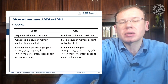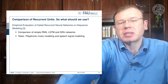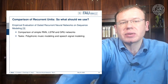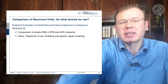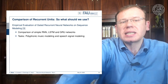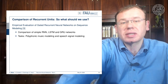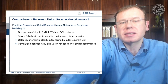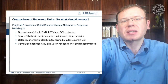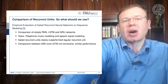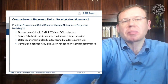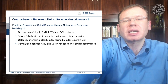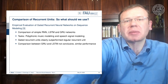We can also compare them empirically. Reference 3 presents an empirical evaluation of gated recurrent neural networks on sequence modeling, comparing simple RNNs, LSTMs, and GRUs on tasks of polyphonic music modeling and speech signal modeling. Results indicate gated recurrent units clearly outperformed the regular recurrent unit. The comparison between GRU and LSTM was not conclusive — they showed similar performance. Both are well-suited for sequence modeling; the GRU has fewer parameters but for these tasks it didn't make a big difference.